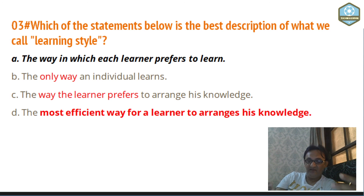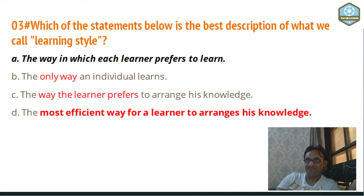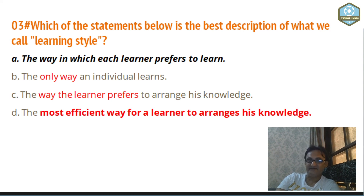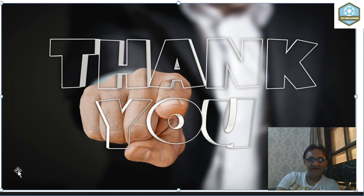Learning styles are variable — each student has their own learning style and prefers according to their own way. So the answer is 'the way in which each learner prefers to learn.' Every individual has a tendency, an individual learning style, an individual need, and they prefer what they want and how they want to learn — that is called learning style. Similarly, teaching style is how a teacher prefers to satisfy individual needs. I hope this information will help you. We'll meet in the next lesson. Thank you so much, stay blessed and stay safe.